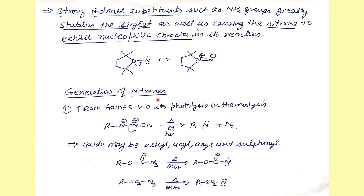The first method for generating nitrenes is thermal or photolytic decomposition of azides. When azides are heated, nitrogen gas is released and a nitrene intermediate is formed. Various types of azides can be used: alkyl azides, acyl azides, aryl azides, or sulfonyl azides.